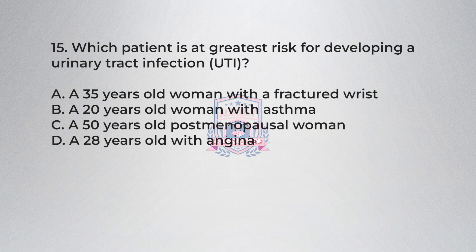Question 15: Which patient is at greatest risk for developing a urinary tract infection (UTI)? A) A 35-year-old woman with a fractured wrist, B) A 20-year-old woman with asthma, C) A 50-year-old postmenopausal woman, D) A 28-year-old with angina.